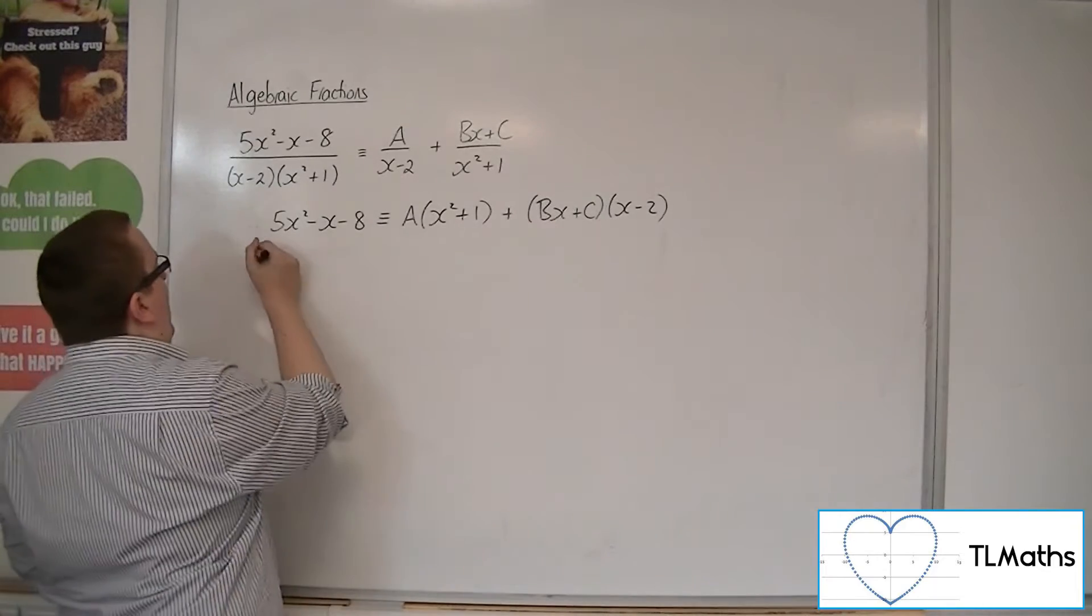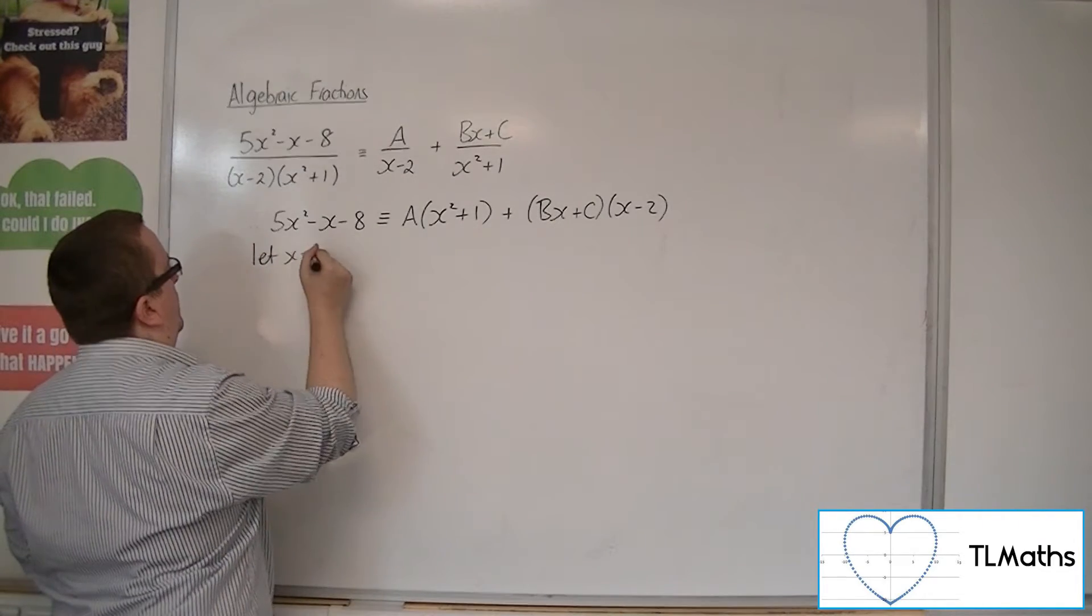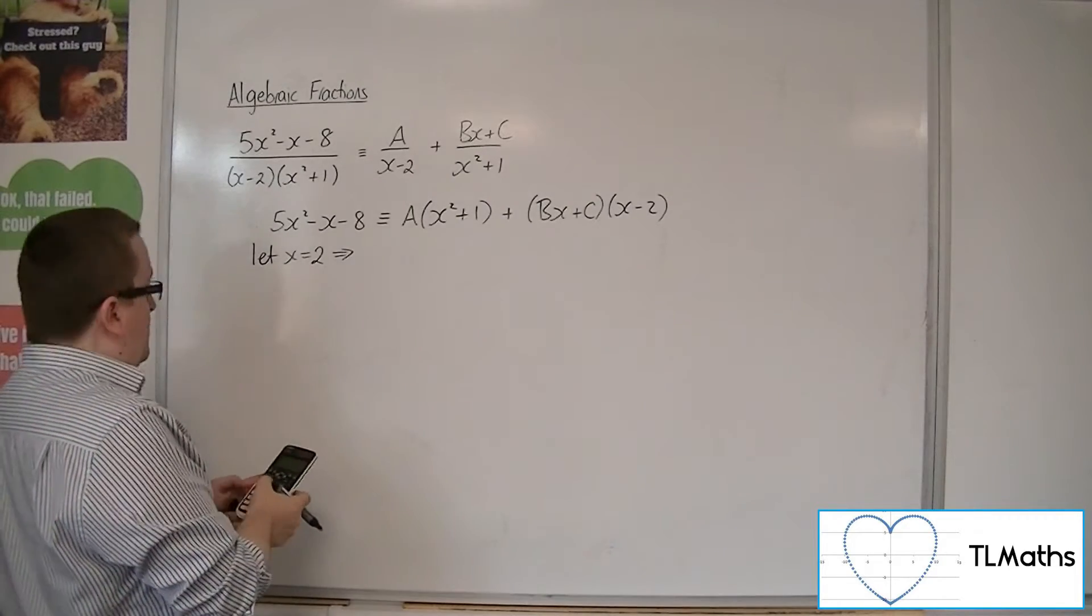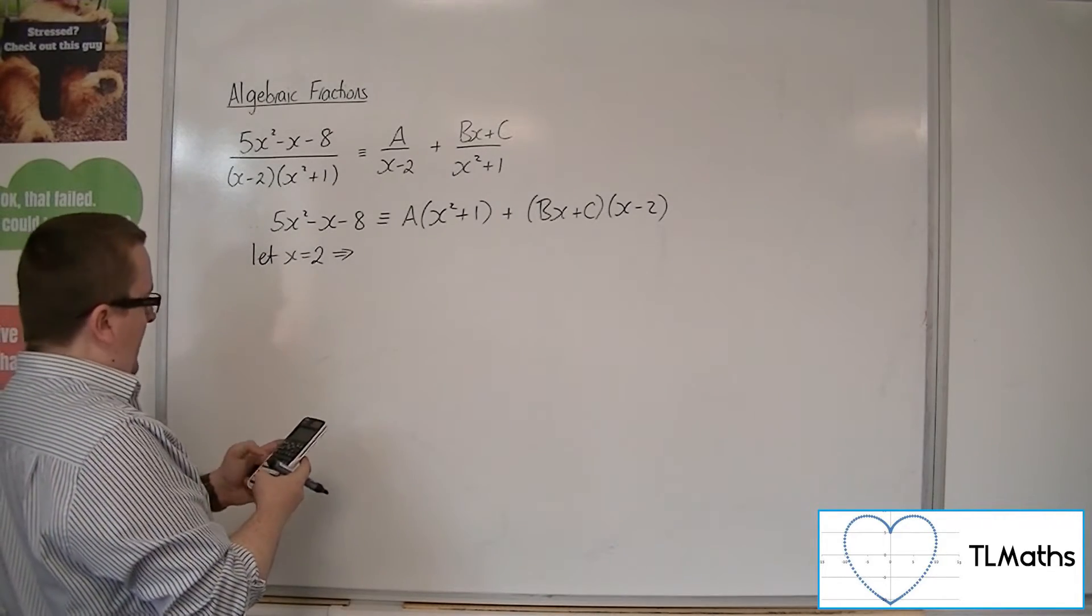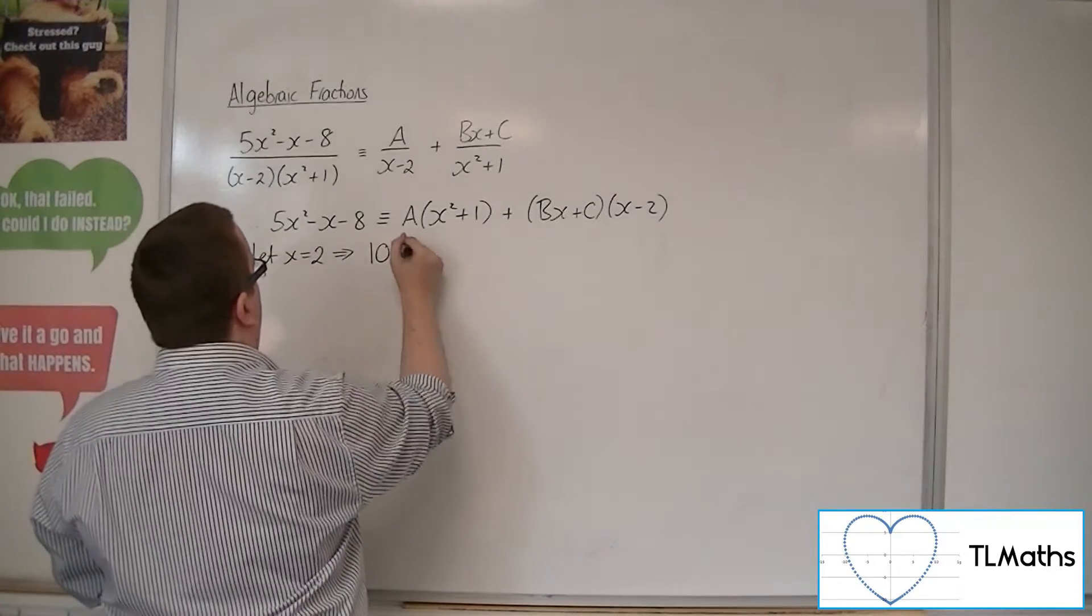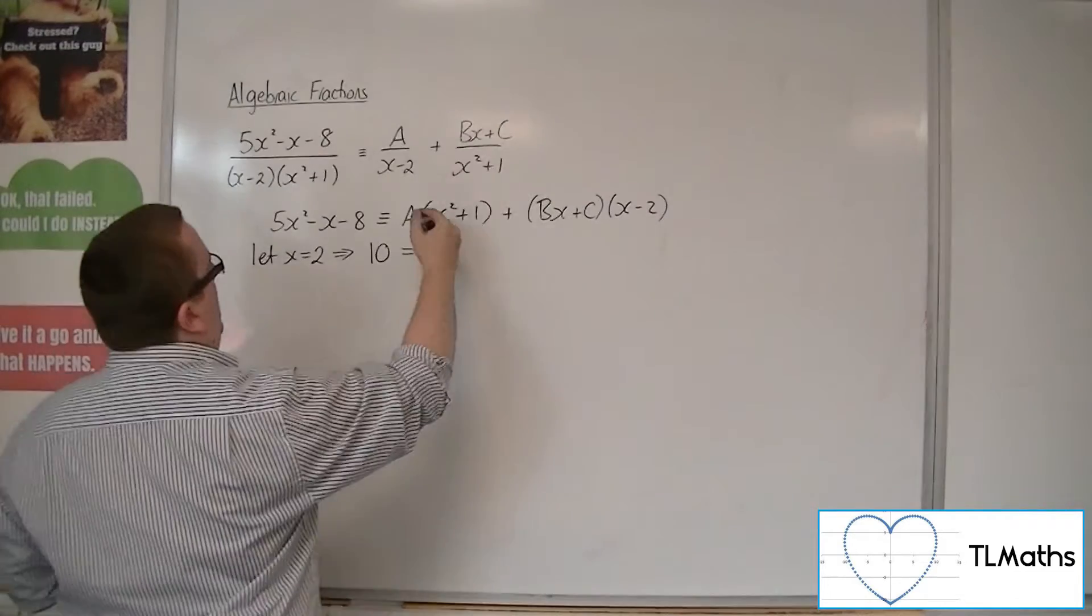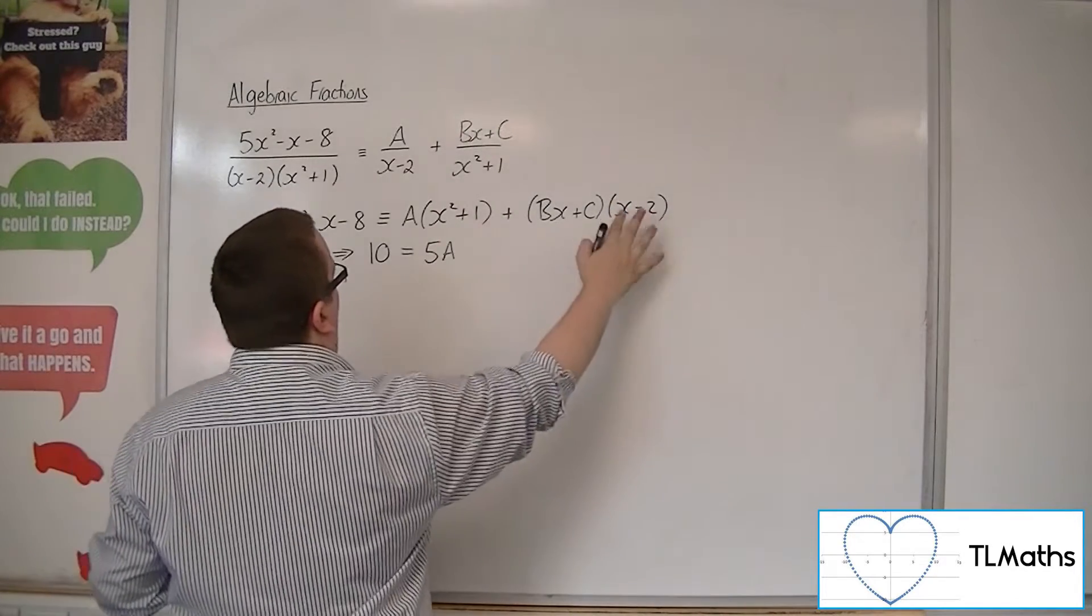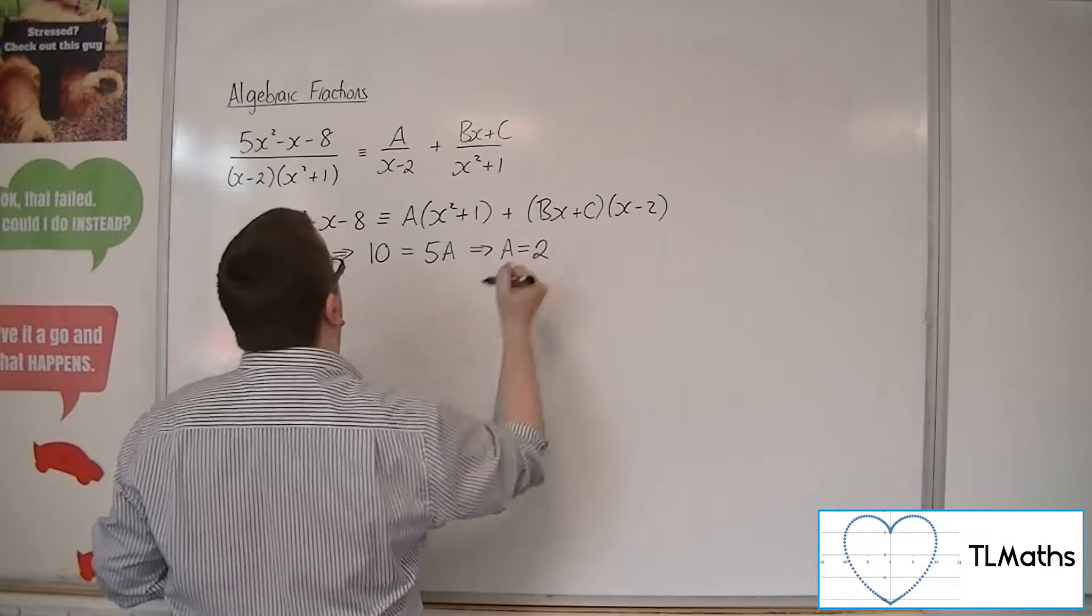So now if we let x be 2, we get the 5 lots of 2 squared, take away 2, take away 8, is 10, so the left-hand side is 10. We're going to get 5 lots of A here, knocks out that bracket, so A is definitely 2.